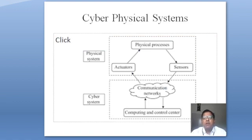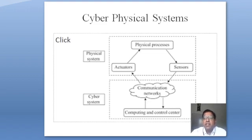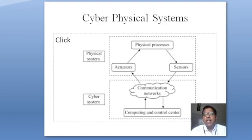Looking at the architecture of cyber physical systems, there are two systems: physical systems and cyber systems. Physical systems include the physical processes or machines in the industry, and sensors installed on the machines for sensing physical quantities. The sensor sends data through communication devices and communication technology to the cyber systems. In the cyber systems or cloud computing, the data is processed, and again through communication devices it is given to the actuators. Actuators perform the necessary corrective actions on the physical systems and processes. This is how the architecture of cyber physical systems works.